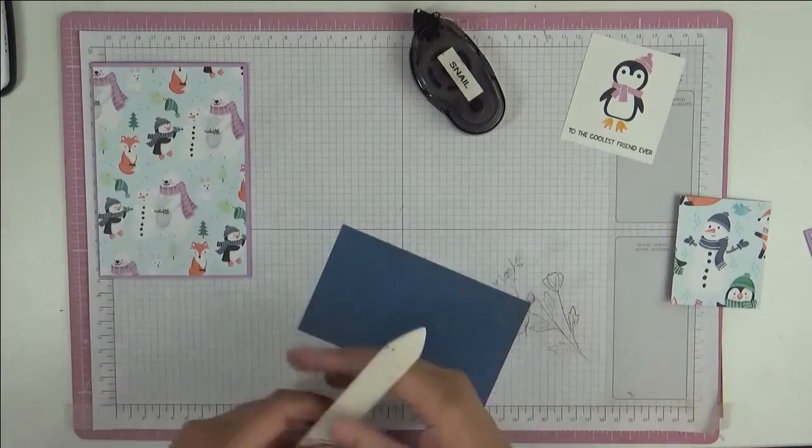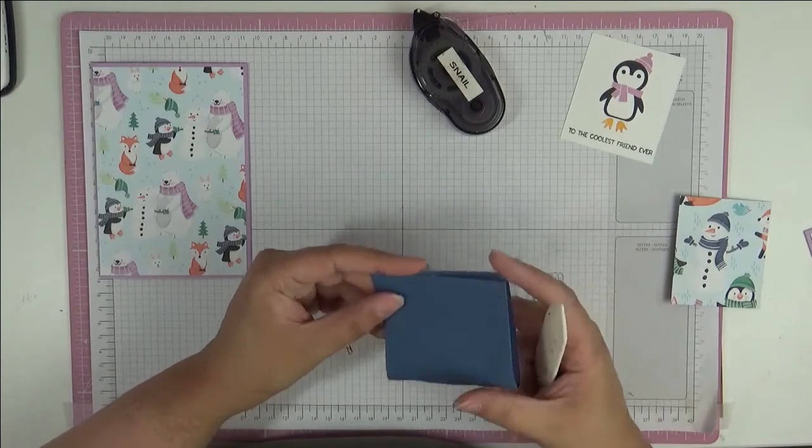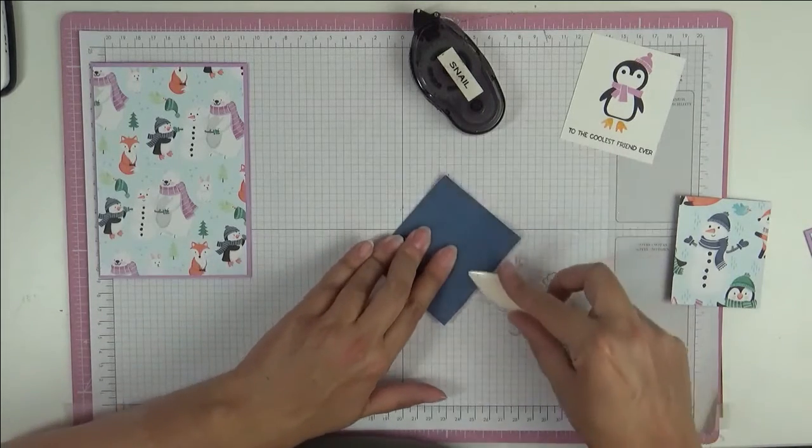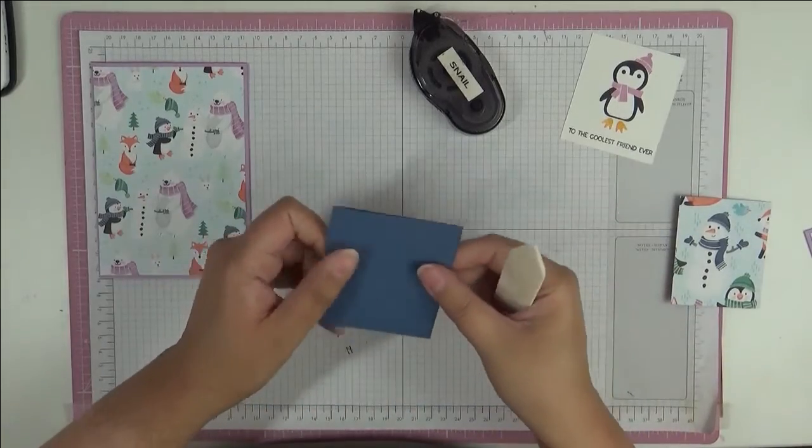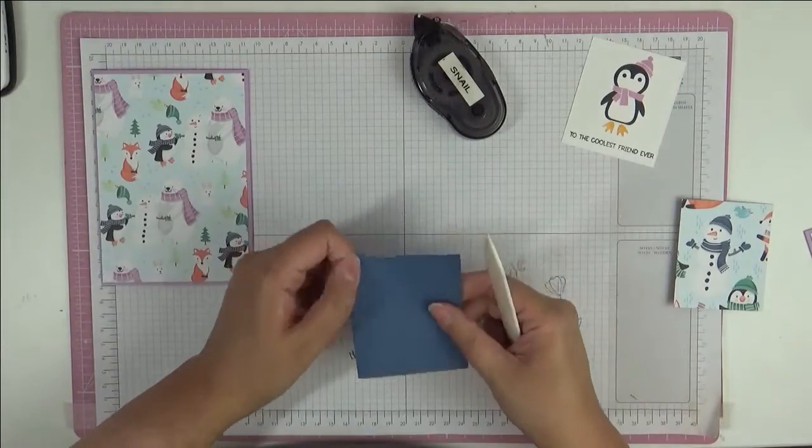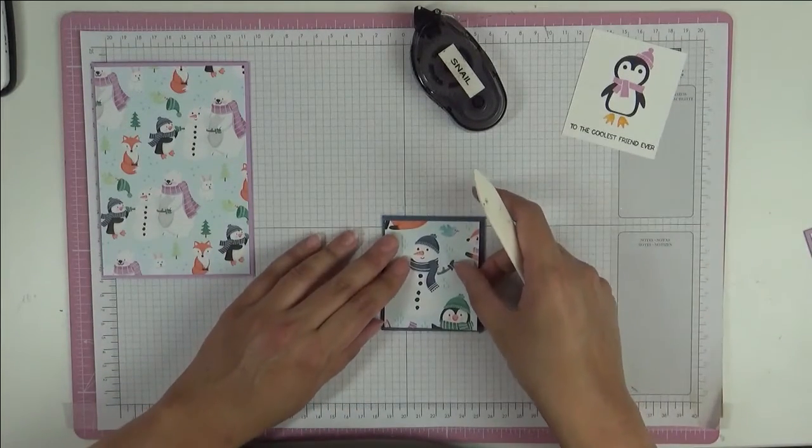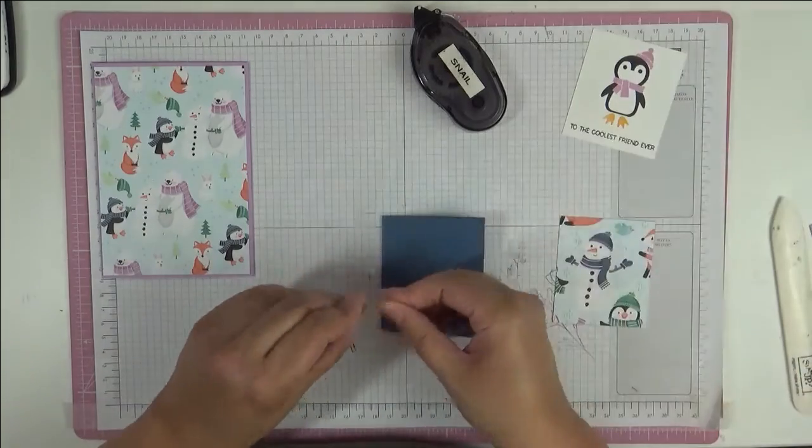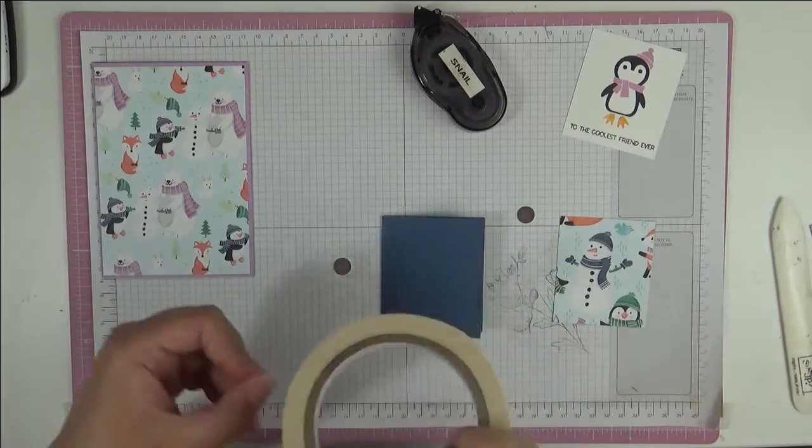Now I've got a piece here of Misty Moonlight. I'm not going to score it in half; I'm just going to take the lazy person's way out and just fold it in half. Give it a good press down with my bone folder, and this is going to make my little flap at the front. Now I've got a piece of designer series paper that's going to go on the front, but first I'm going to bring my magnets in.